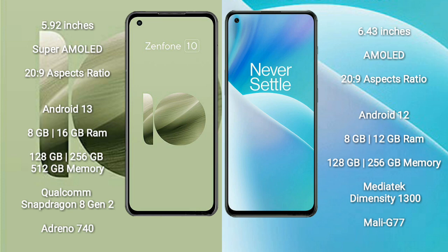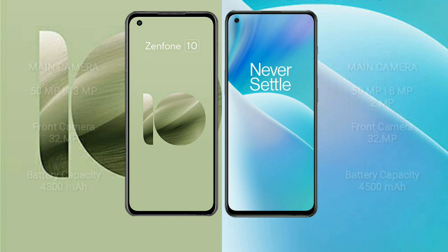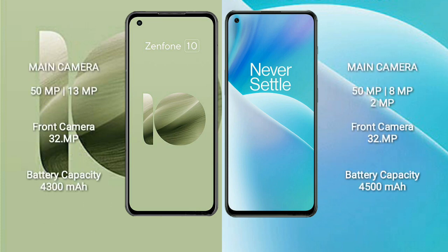The Asus Zenfone 10 comes with 8GB or 16GB RAM and 128GB, 256GB, or 512GB internal storage, powered by the Qualcomm Snapdragon 8 Gen 2 processor and Adreno 740 GPU. The OnePlus Nord 2T comes with 8GB or 12GB RAM and the MediaTek Dimensity 1300 processor with Mali-G77 GPU.